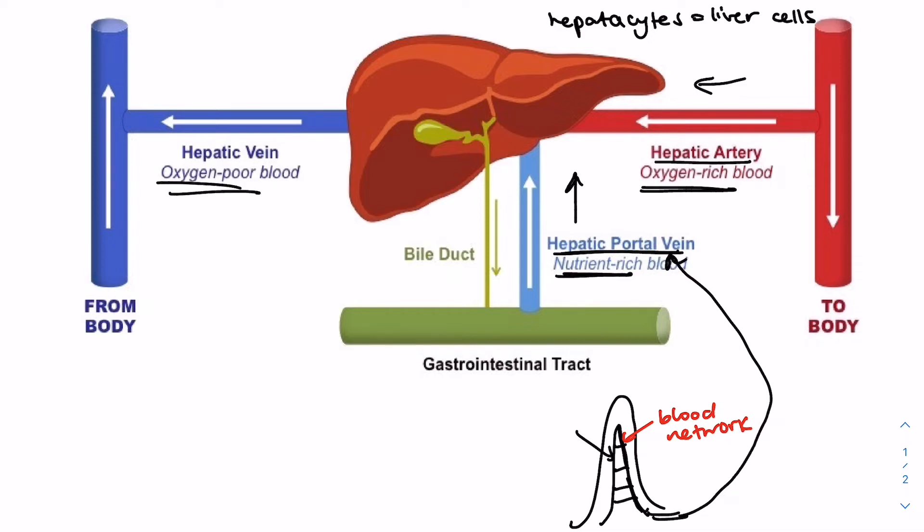So deoxygenated blood then leaves the liver via the hepatic vein. And this goes back to the heart to get reoxygenated and enter back into the overall cycle.